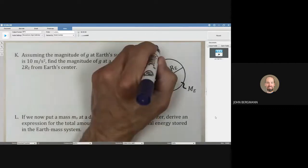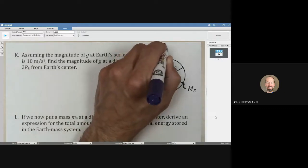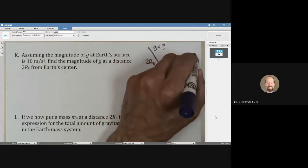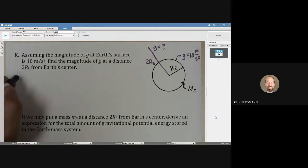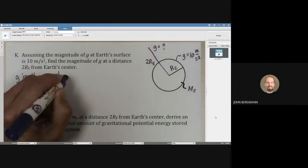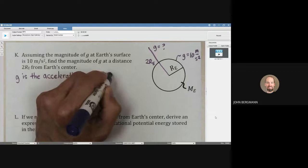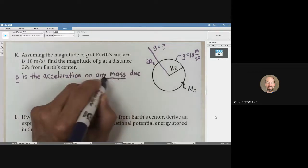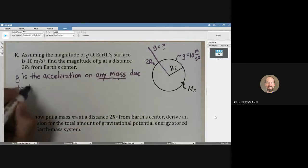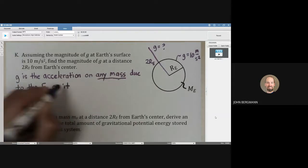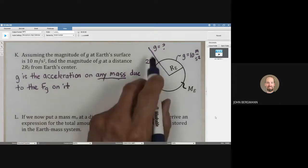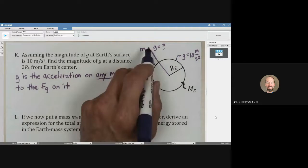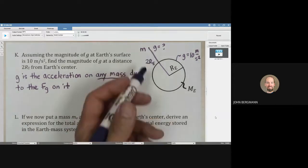We want to know what the value of g is right there when g at the surface is 10 meters per second squared. Well, the first thing we need to realize is that g is the acceleration on any mass due to the FG on it. In other words, we're going to invoke Newton's law of gravity here. Let's say we had a mass little m right up there - could be very massive or not very massive at all, but let's just call it m.